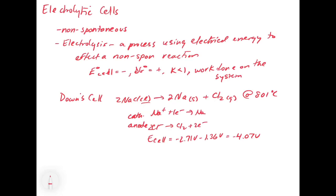You can see that this is how we would set up an electrolytic cell: we have to apply an external potential to make it work. With molten salts, this is done pretty easily because in a molten salt we have our liquid which contains the ions. When you stick your electrode in, the ions are right there for you to work with.